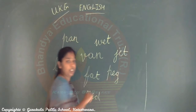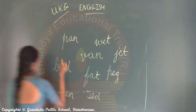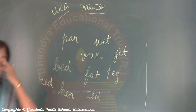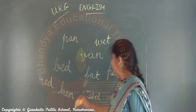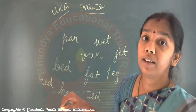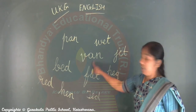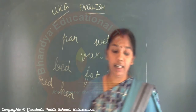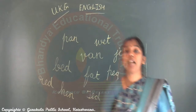Ted, H-E-N - Hen, P-E-G - Peg, W-E-T - Wet, Vet. Any other? J-E-T - Jet. Next, one colour - what is it? R-E-D - Red. B-E-T.